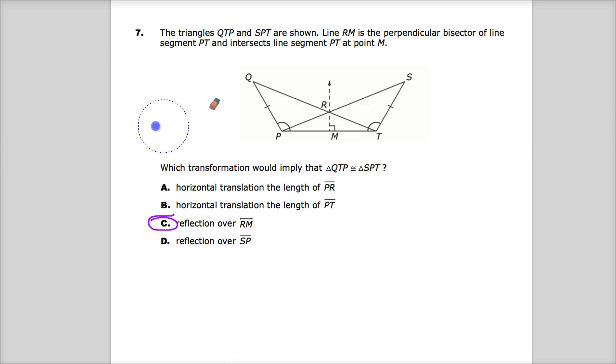A reflection over SP would actually send this point down here, and it wouldn't fall right on top of the other one. So when you're trying to prove congruence, or at least imply congruence through translations, look around to see if there's a way that you can move one of the two shapes so it actually falls over and shadows completely the other, and then it would sort of imply that they are congruent.